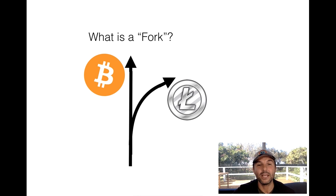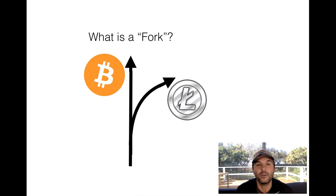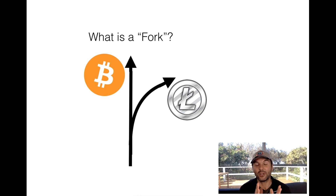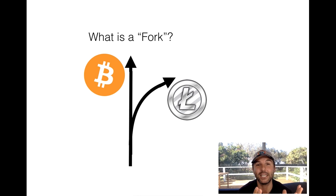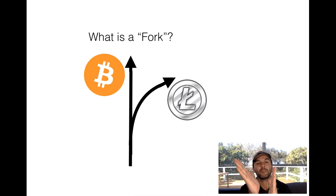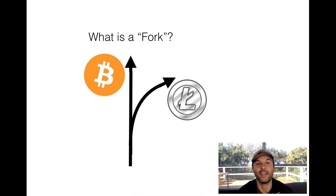Probably the best example in Bitcoin history to date is how Litecoin was created, which is literally just a fork of Bitcoin. The only difference between Litecoin and Bitcoin is Litecoin has more coins and instead of a 10-minute block time, it's a two-and-a-half-minute block time. That's basically it. It becomes a totally new entity unto its own right. And that's how Litecoin was created — so that is a fork.